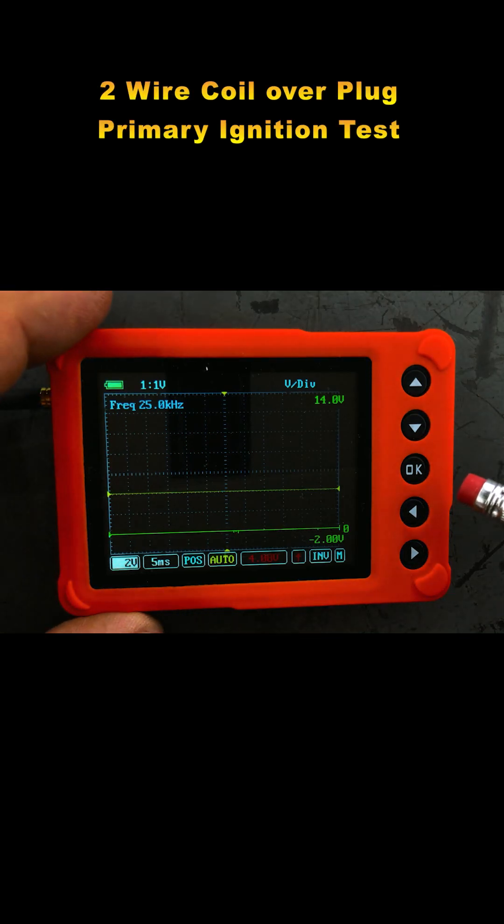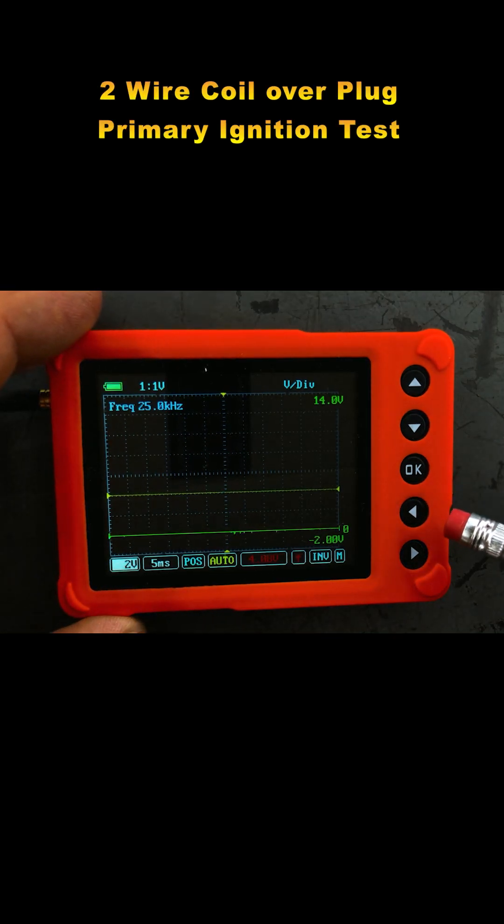Let's do our coil-over-plug primary. This is a two-wire coil-over-plug.